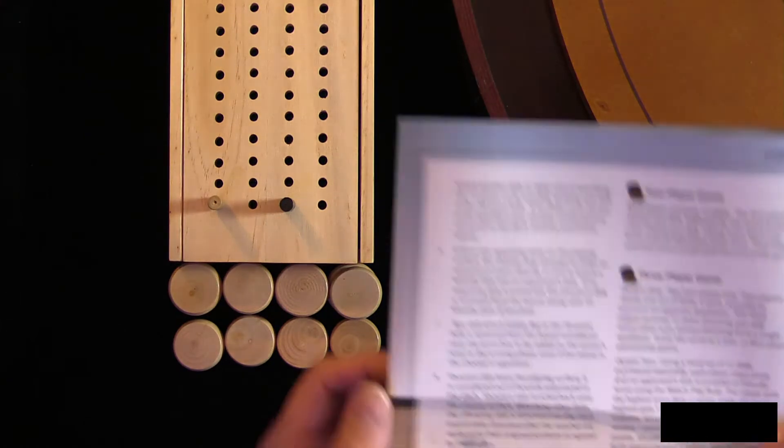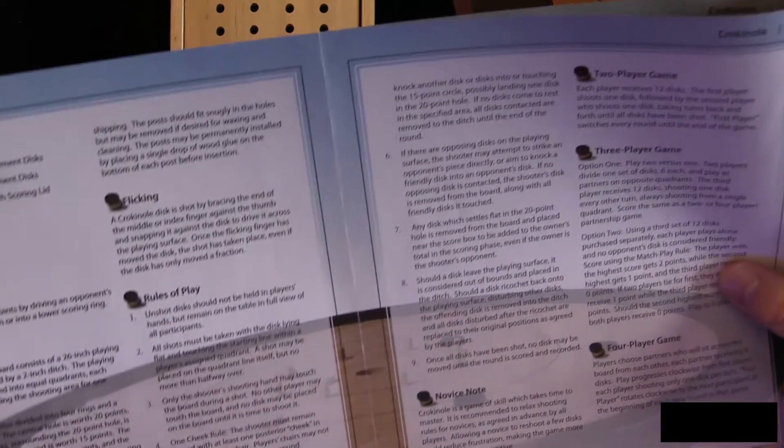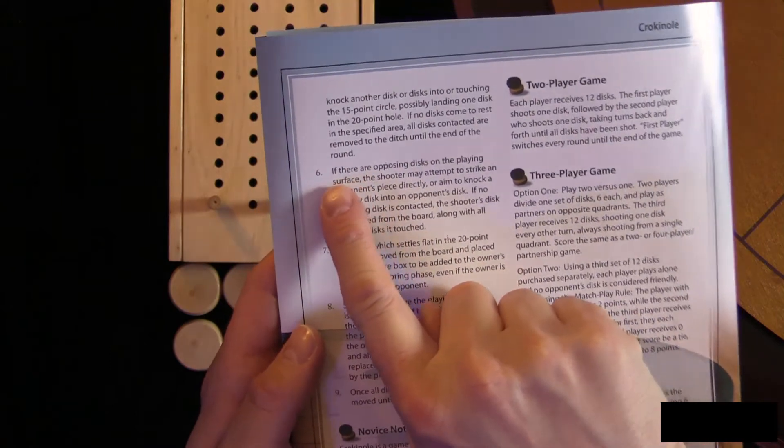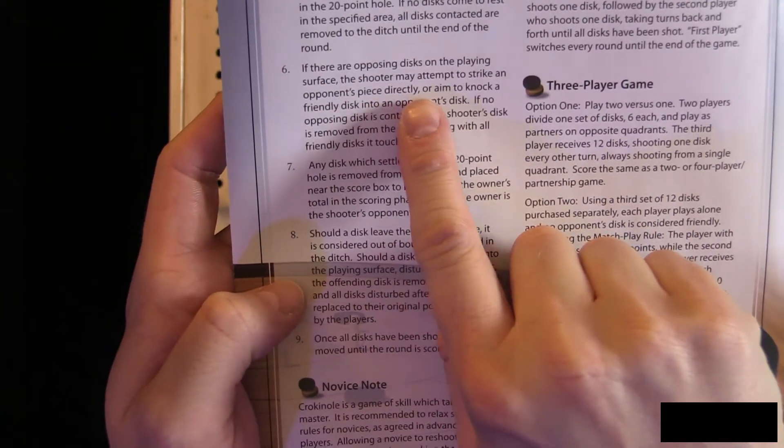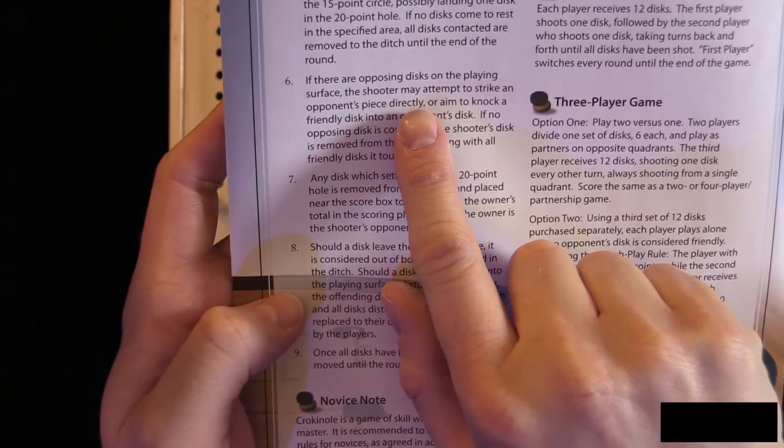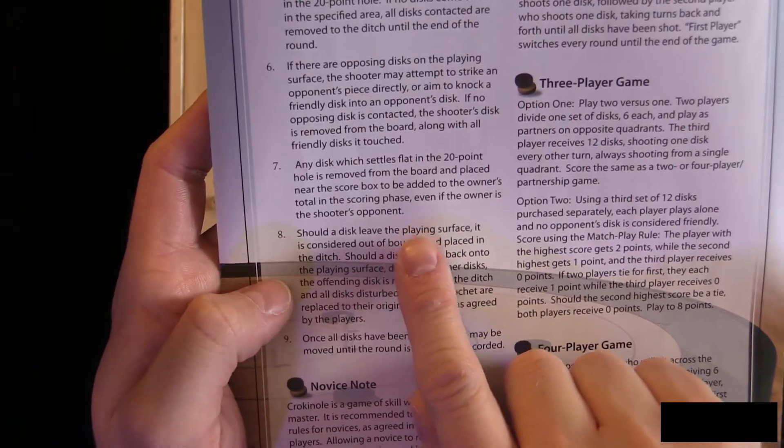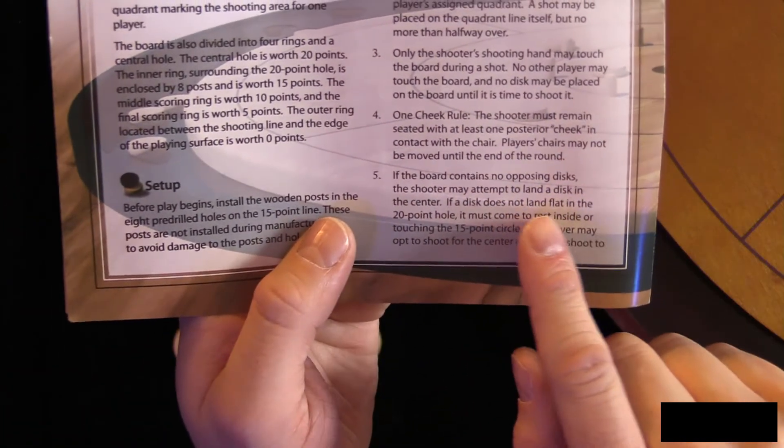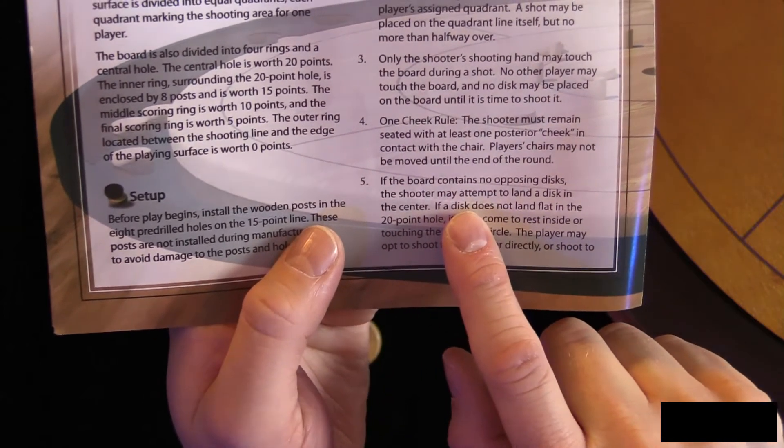When you look at the rules here, you'll see right here on number six: 'If there are opposing discs on the player's surface the shooter may attempt.' The word should not be may, it should be must. So replace that may with must. And then there's another spot where it says may. 'If the board contains no opposing discs the shooter may attempt to land a disc on the center.' It should say must attempt.